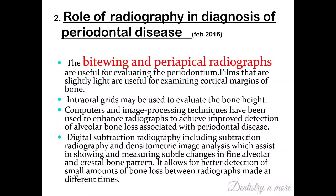The role of radiography in the diagnosis of periodontal diseases can be examined using periapical radiographs and bitewing radiographs, as well as OPGs for generalized periodontitis. Bitewing and periapical radiographs detect localized areas of horizontal or vertical bone loss interdentally. Under digital radiography, digital subtraction radiography and densitometric image analysis help assess subtle changes in alveolar crestal bone patterns, allowing better detection of small amounts of bone loss between radiographs made at different times.